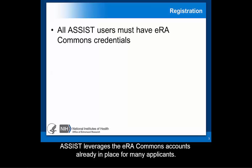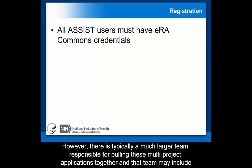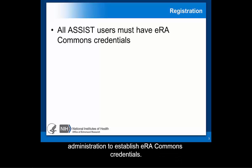ASSIST leverages the eRA Commons accounts already in place for many applicants. At a minimum, the principal investigators and a signing official will need to access ASSIST to prepare and submit the application. However, there is typically a much larger team responsible for pulling these multi-project applications together, and that team may include folks that do not yet have Commons accounts. They should work with their Office of Sponsored Research or similar group responsible for account administration to establish eRA Commons credentials.